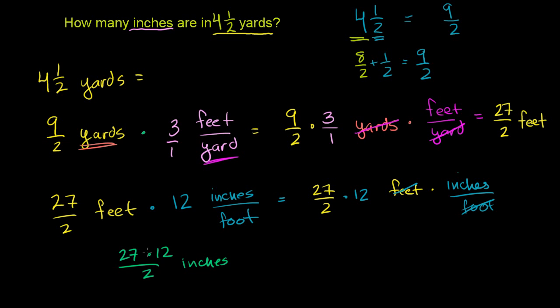And before we multiply the 27 times 12 and then divide by 2, you immediately see, I could just divide 12 by 2 and 2 by 2, and it makes our computation simpler. 12 divided by 2 is 6. 2 divided by 2 is 1. So it becomes 27 times 6 inches. And let's figure out what that is.